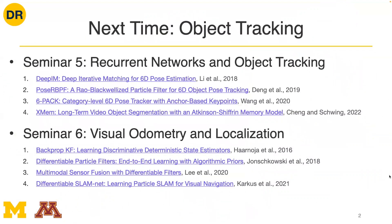Next week's seminars focus on object tracking across two broad sub-areas. Seminar five on Tuesday covers using recurrent neural networks — or other forms of fusion within networks — to perform instance-level object tracking. For example, in pose estimation, we'll fuse network predictions across time to estimate pose at every time stamp. Deep IM and Pose RBPF are forms of this fusion. We'll also look at tracking key points as opposed to exclusively the pose.